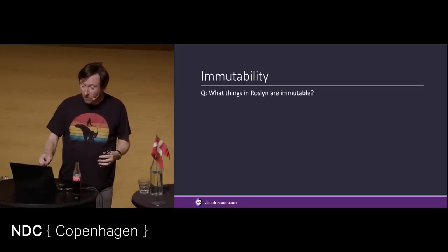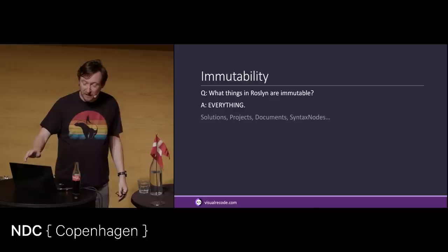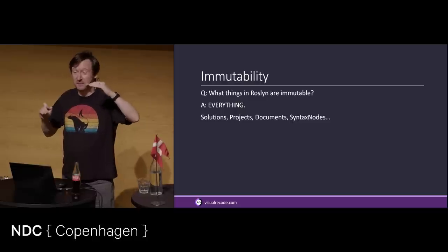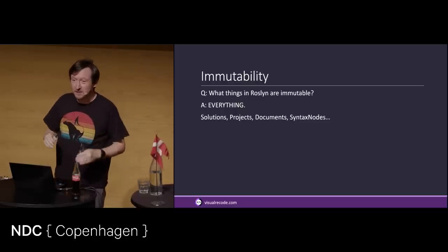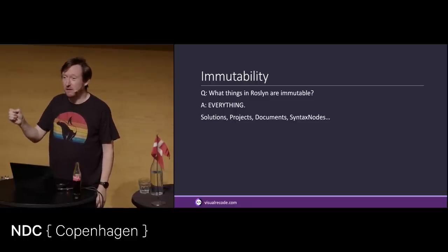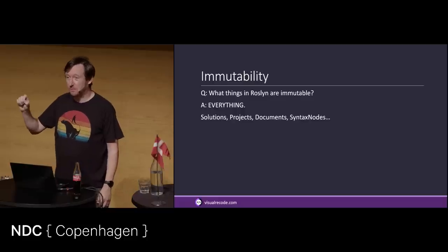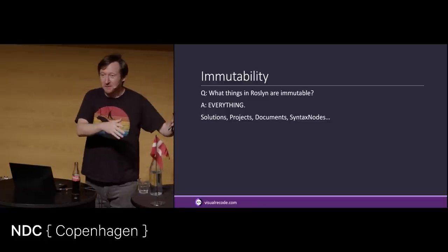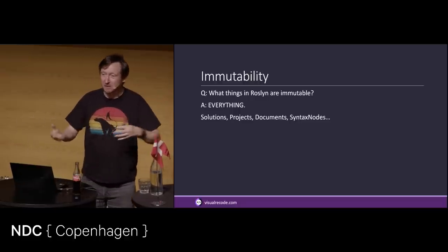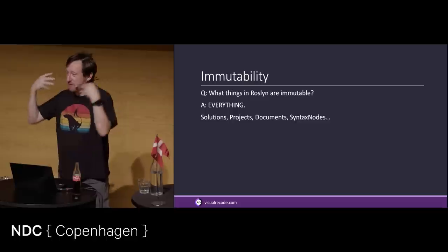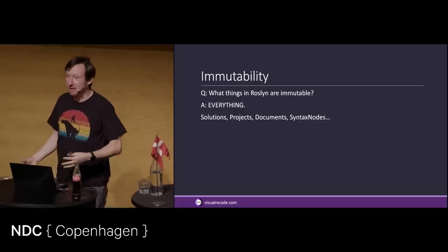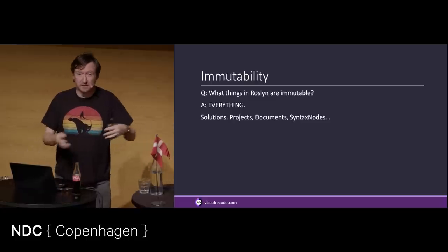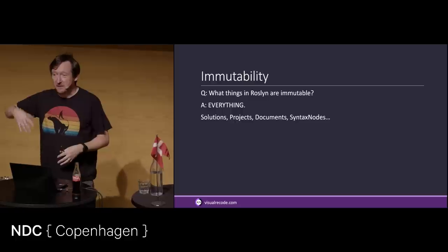So if you add one letter to one line in one syntax node in one document in one project, what you get is a new solution — because it's immutable. And then that becomes the active solution. Every time you change something, it's rebuilt. They're not literally recreating the entire tree every time, but making a change to a syntax node affects the solution at the top level. Then you go back to the workspace and say apply the changes from this solution, and that becomes the current solution.